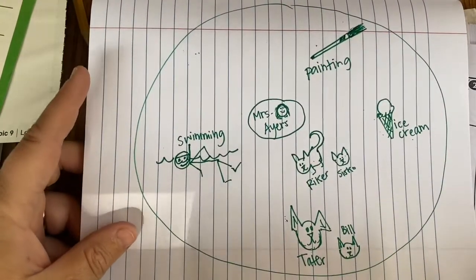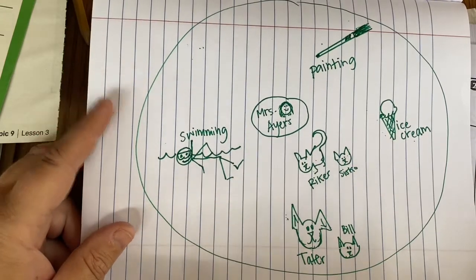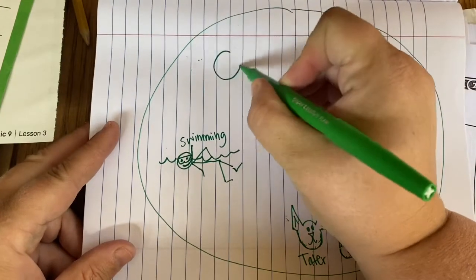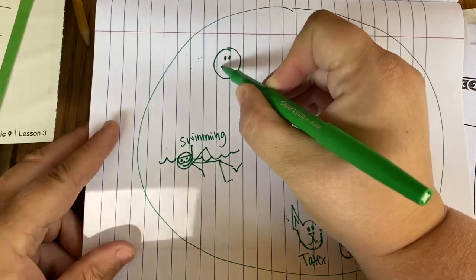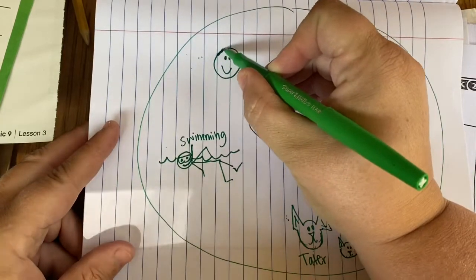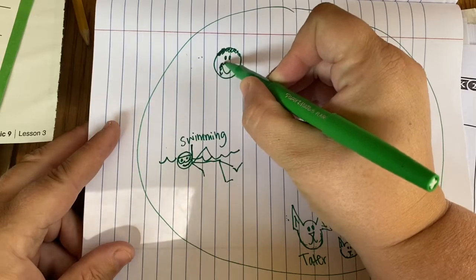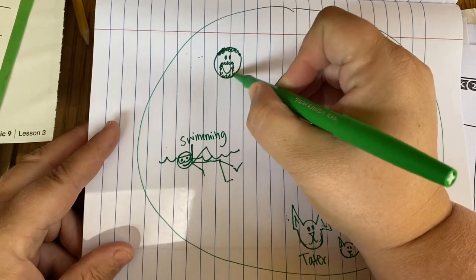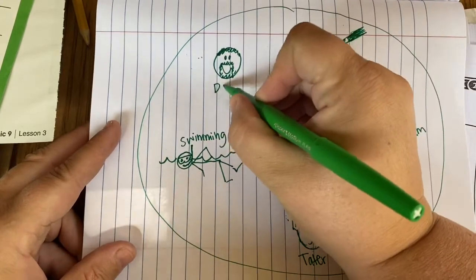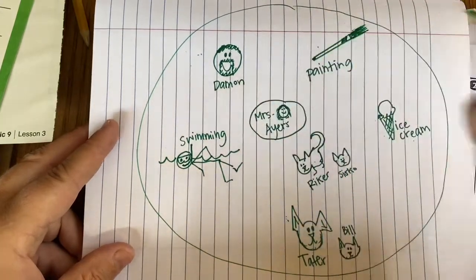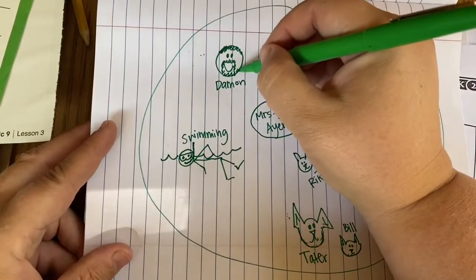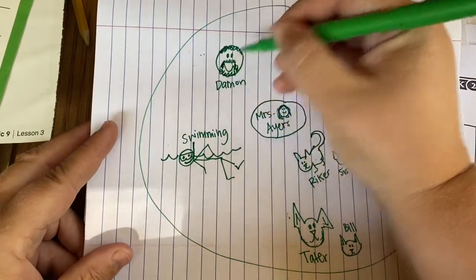You can put the people who live in your house if you want. I have a husband. His name is Damon. He has short, short, short hair. And he has a mustache beard that goes like this kind of. That's my husband. But you might put whoever you live with, your grown-ups at your house.